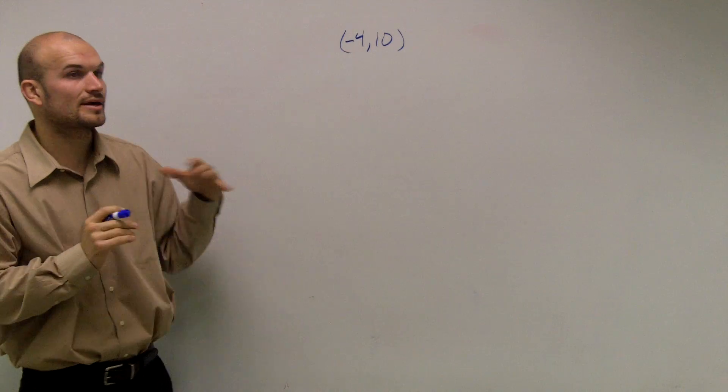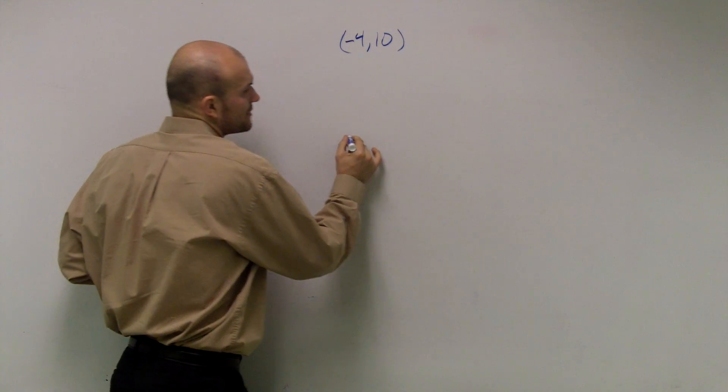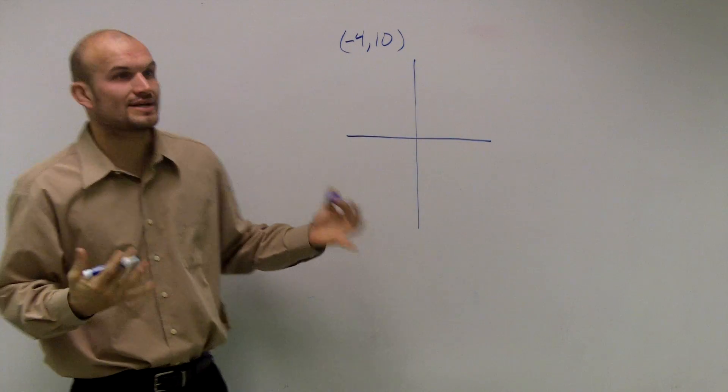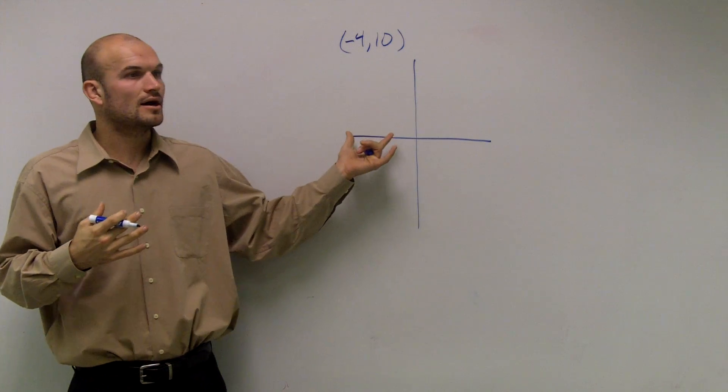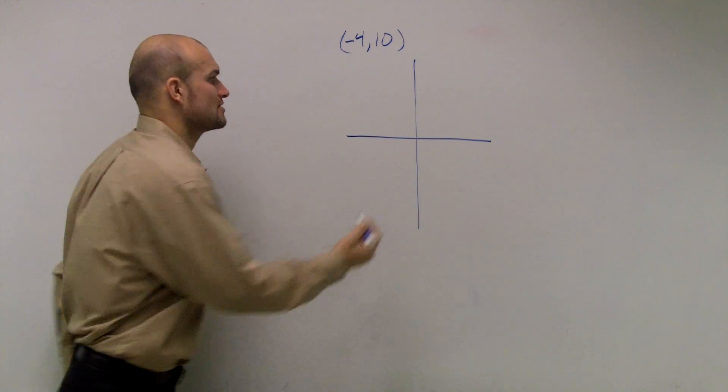So what they ask is pretend this is a point that's on a terminal side. So now what we're going to be dealing with is points that are not on the unit circle. Therefore, to evaluate our functions, we're going to have to use a right triangle.